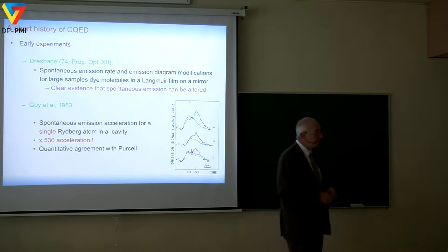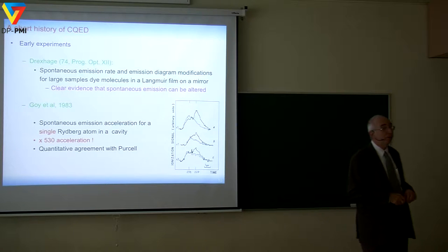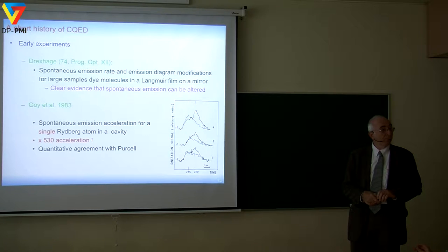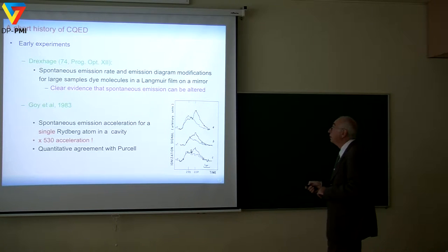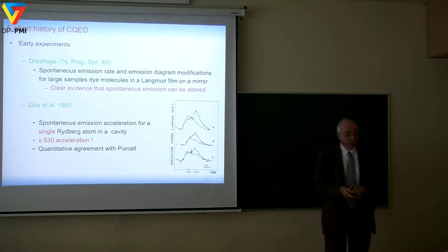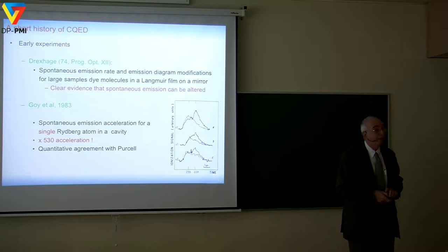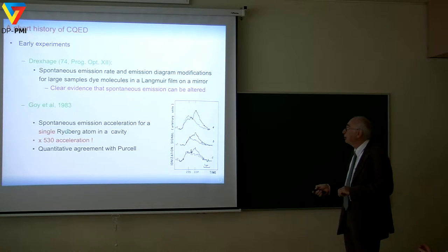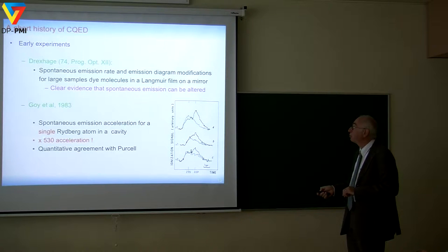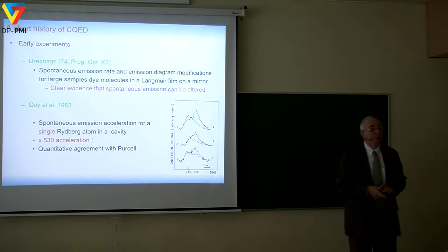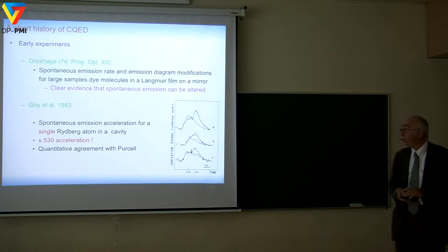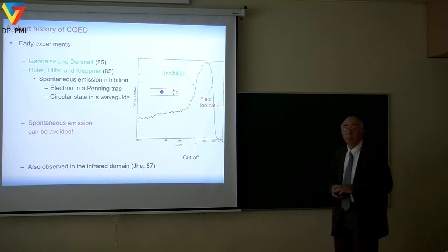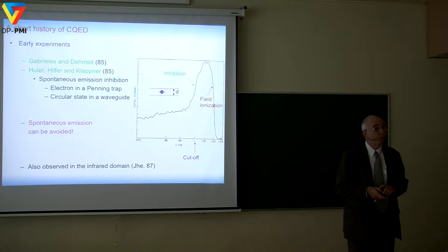Kleppner, in 1981, noticed that if you can speed up spontaneous emission, you can also slow it down by placing an atom in a metallic structure where there is no mode at the frequency of the atomic transition — the atom just cannot emit a photon because there cannot be any photon at that precise frequency. The early experiments on cavity QED were performed by Drexhage a long time ago in the 70s, studying dye molecules in front of a mirror, but those were rather qualitative experiments. The first manifestation of enhanced spontaneous emission was obtained in our group in 1983, where we observed that you can speed up a microwave transition by something like a factor of 500.